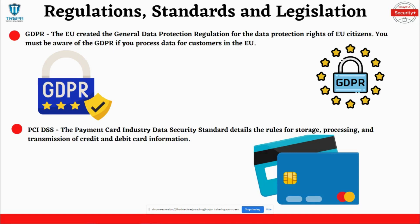The Payment Card Industry Data Security Standard is a US regulation that details the rules for storage, processing, and transmission of credit card and debit card information. If your organization processes credit card information in the US, you must comply with the PCI DSS regulation. This will go over stuff like how to properly segment your network when you're processing credit card information.